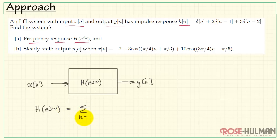We can find the frequency response from the impulse response like this. Let's sum from k equals minus infinity to positive infinity of h of k times e to the minus j omega k.